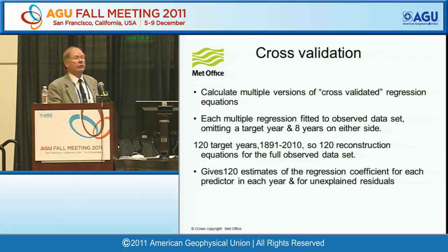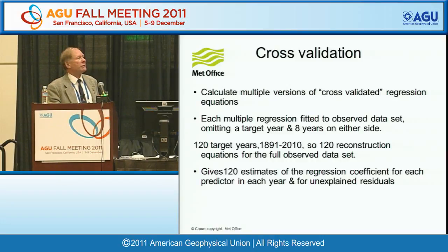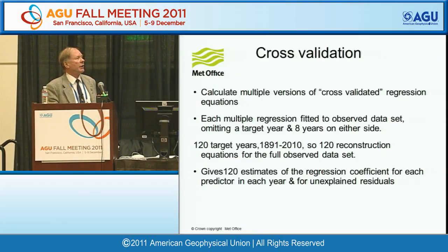We've done multiple regression, but most of the work done in multiple regression on this subject is actually biased. You cannot fit multiple predictors without some corrections — the results are biased and the skill is overestimated. So we've used a technique called cross-validation, or the jackknife technique. We omit the target year, and to overcome problems of short-term persistence, we remove the eight years on either side of the target year. This produces 120 target years and 120 reconstruction equations, allowing us to estimate uncertainty and remove the bias.